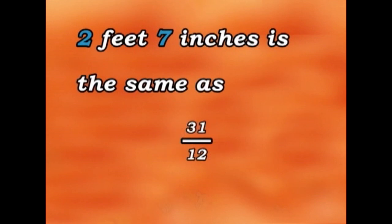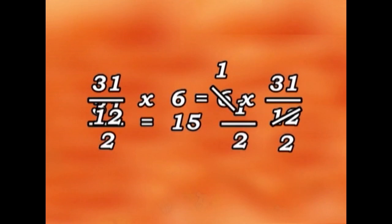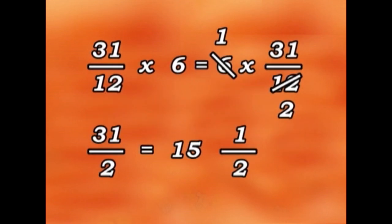Now let's multiply thirty-one twelfths by six. First, we simplify it. We have six and we have twelve, so that's one and two. So now we get thirty-one over two.